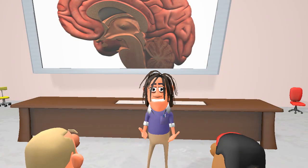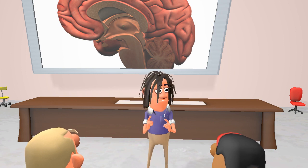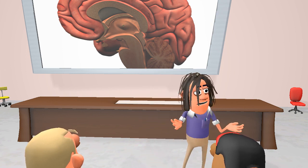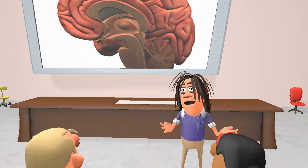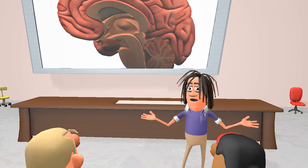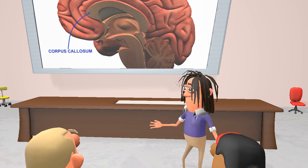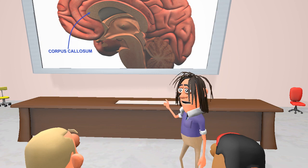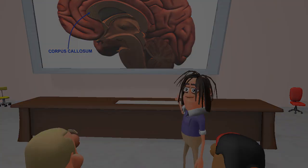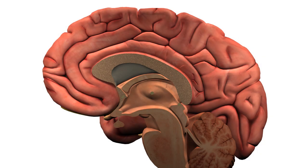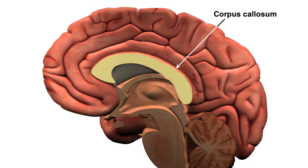Now, these commissures are quite small and they can be hard to find. However, there is a much bigger commissural bundle found in the centre of the brain: the corpus callosum. The corpus callosum is a very dense structure, and is in fact a series of commissural fibre bundles that connect the right and left cortices.